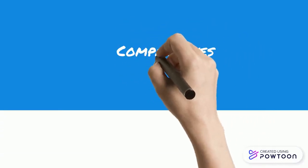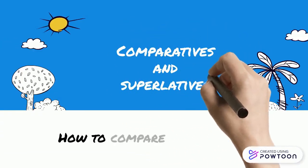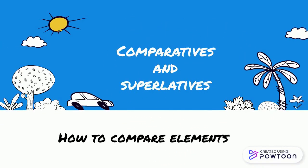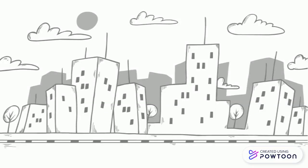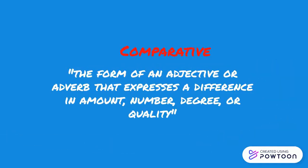Comparatives and superlatives. Today we are going to talk about how to compare elements together. The first grammatical tool is the comparative. A comparative is the form of an adjective or adverb that expresses a difference in amount, number, degree, or quality.